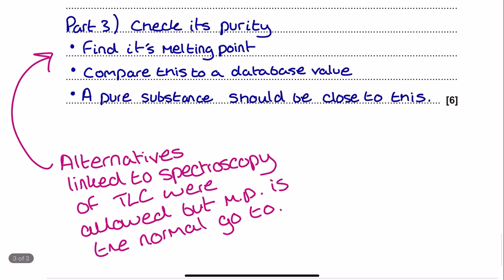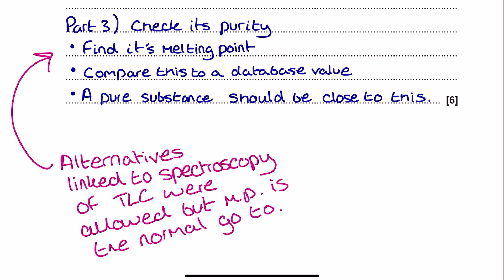Finally, the last sneaky bit: we've been told to check its purity. What we need to do is find the melting point and compare it to a database value — a known value for 3-nitrobenzoic acid. A pure substance should have a melting point very close to this data book value. The 2017 paper 2 mark scheme also lists spectroscopy and TLC as alternatives, but the primary expected response for checking purity of an organic solid is melting point analysis.